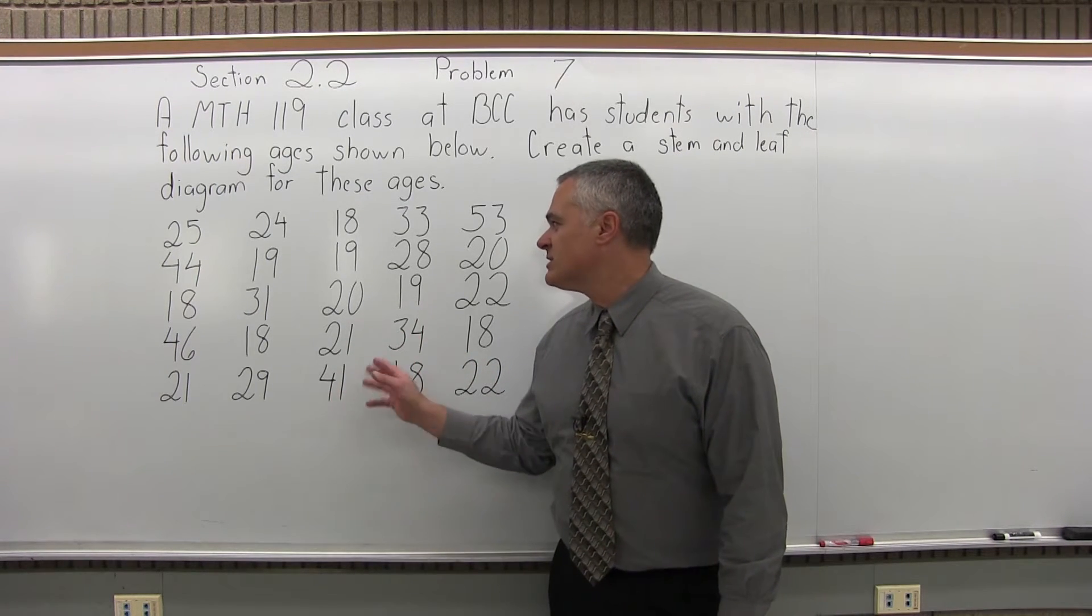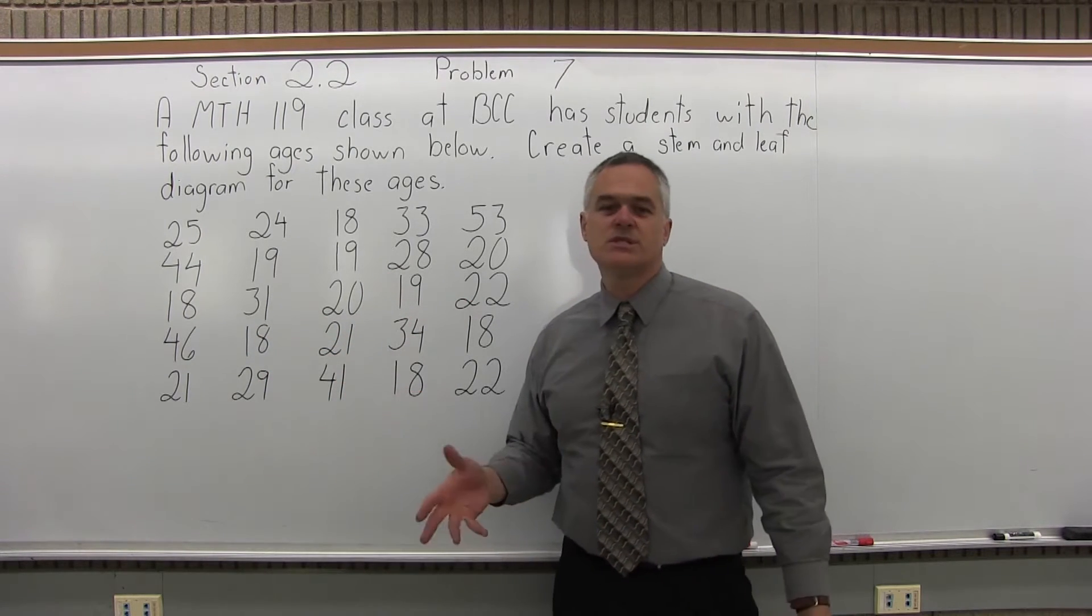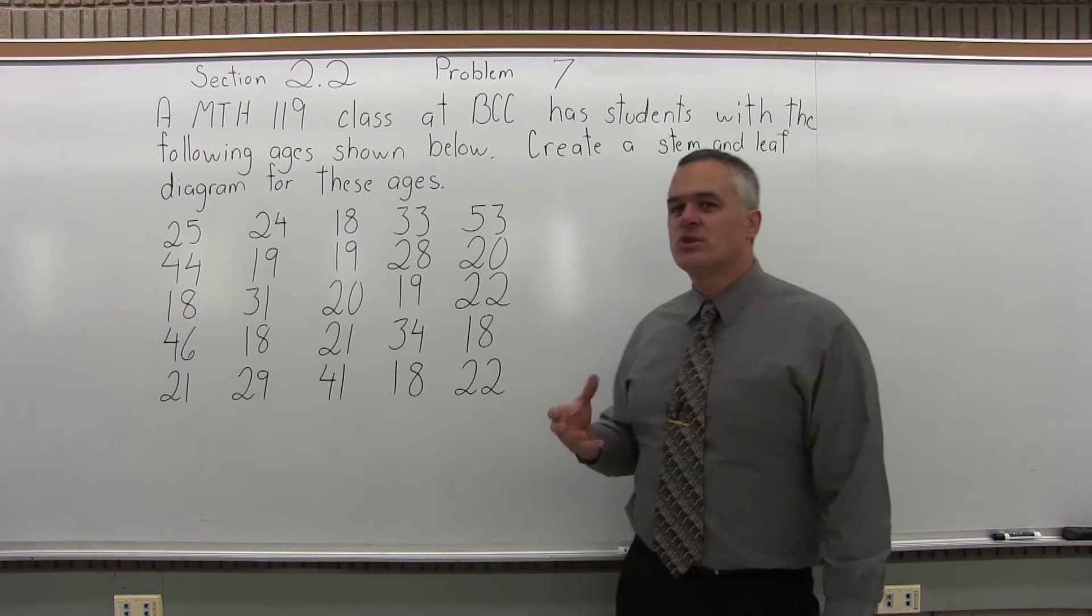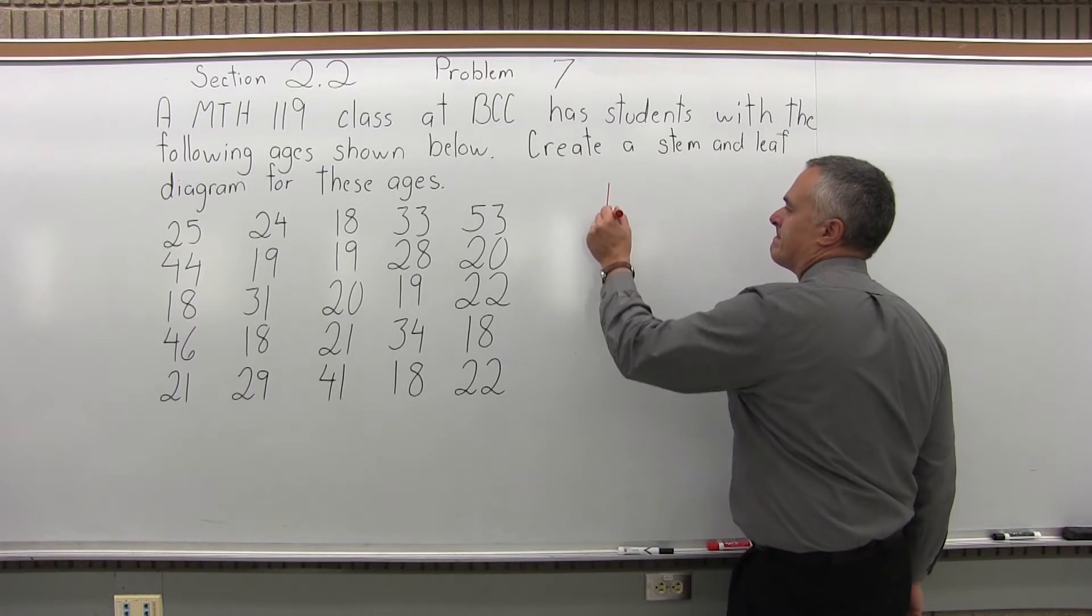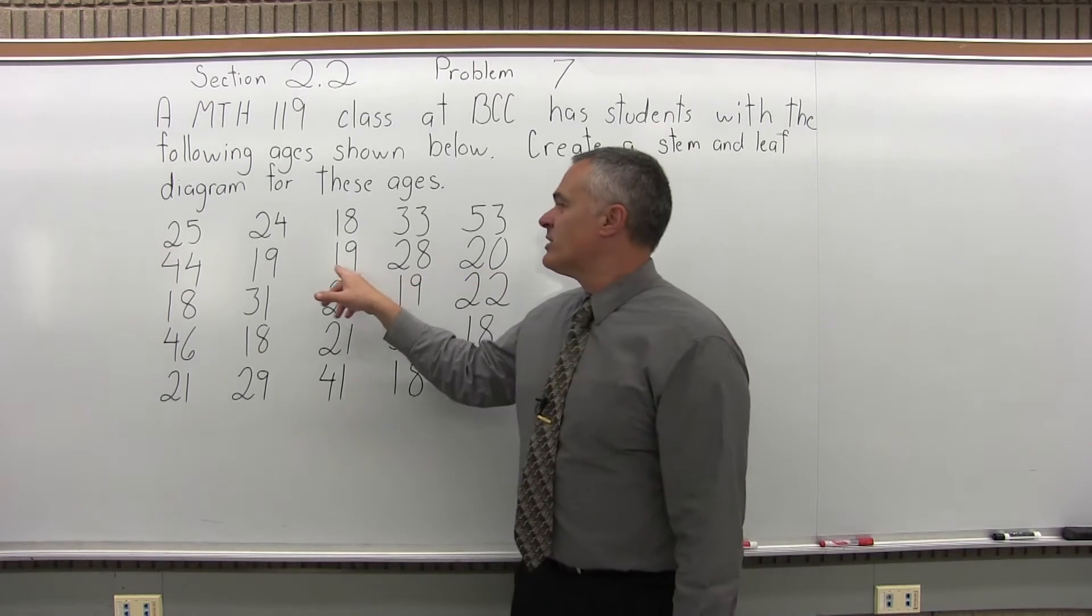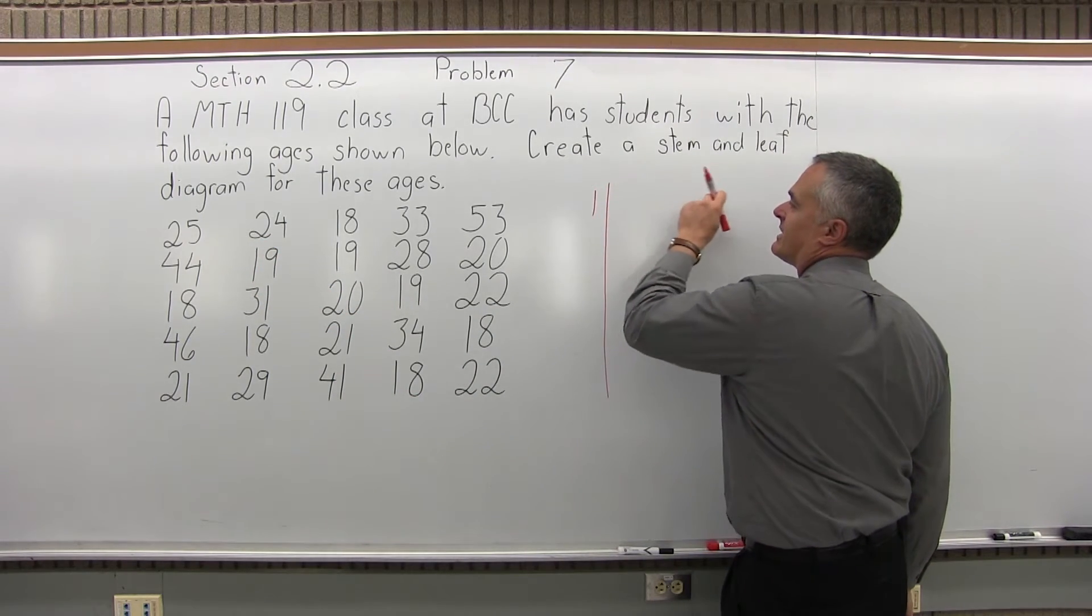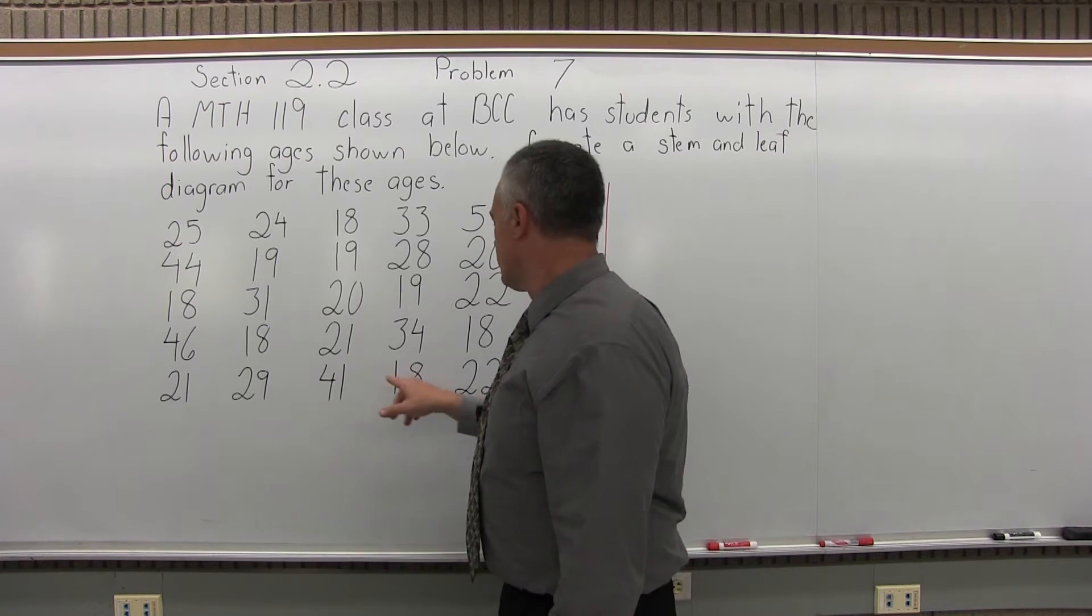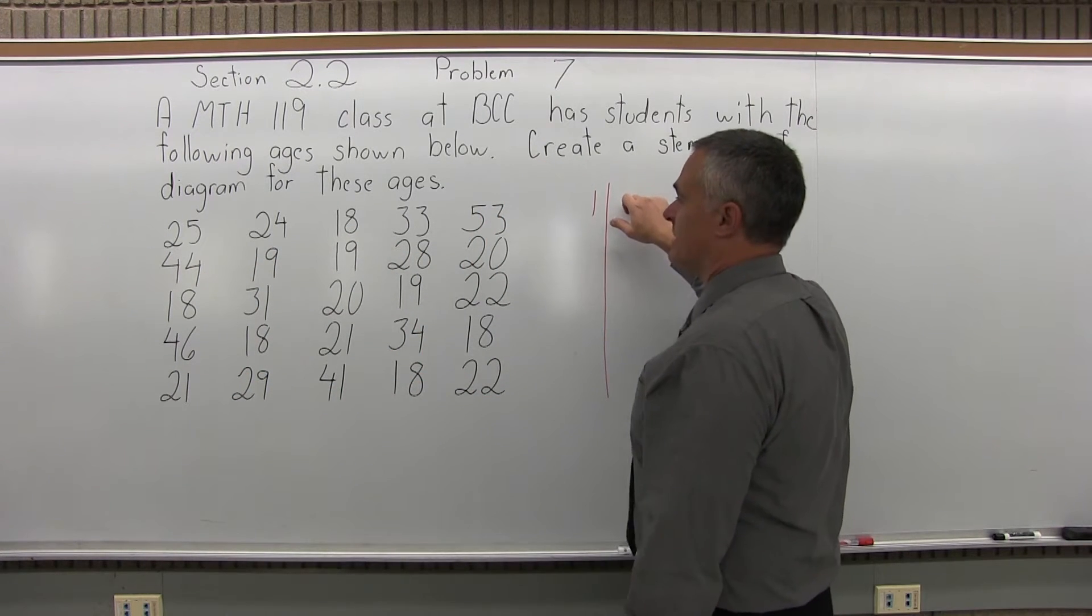So you have a group of different ages, a lot of 18 to 22 and then some others older, which is typical of what you'd see at BCC. This is a realistic problem. So the stem and leaf plot is going to be sort of like a bar graph with some digits in it for the bars. We'll make a vertical line. The lower numbers start with the first digit of 1. That's going to be the first stem, and then the second digit is what they call the leaves. As I look through, 18 seems to be the youngest age, so I'm going to start with that. The first leaf will be 18.